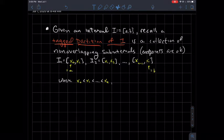Given an interval I, that's the closed interval from a to b, recall that a tagged partition of this interval is the following. So it's a collection of non-overlapping subintervals. And when I say non-overlapping, it's okay if the endpoints overlap, but nothing else.